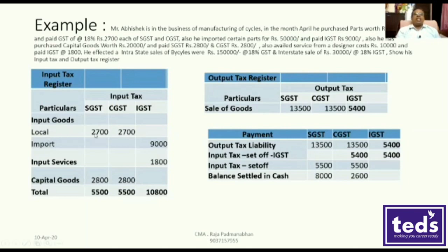Local purchase of goods: Rs. 2,700 each. Input tax register — local goods — Rs. 2,700 each, that is Rs. 2,700 of SGST and CGST. First transaction. In this case, we have the import. The IGST paid is Rs. 9,000. The import of goods is Rs. 9,000.